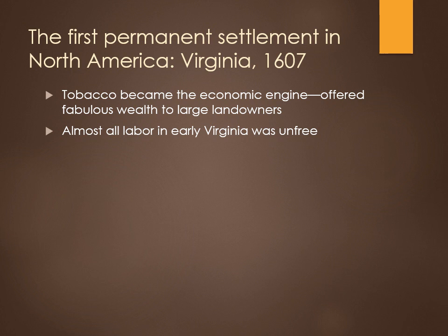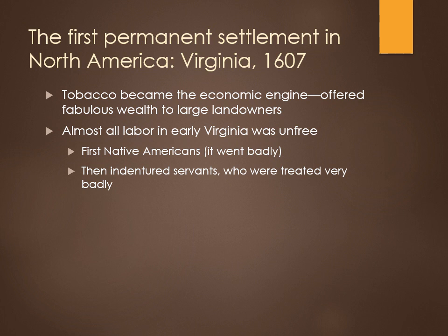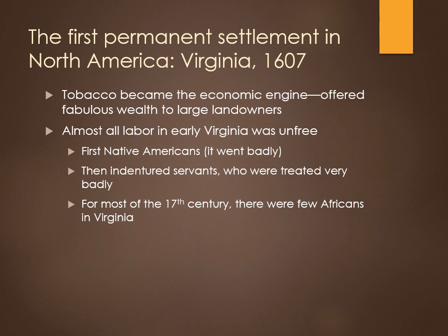Almost all labor in early Virginia was unfree labor, and that took three different forms. The first attempts were to force the labor of Native Americans. That went badly — they could escape, they knew the countryside, they were simply not willing to cooperate. Then they brought over indentured servants — people from the bottom of English or Irish society, carried across the Atlantic in return for several years of service. They were treated terribly; their lot was not much better than that of slaves. And for most of the 17th century, there were relatively few Africans in Virginia. By far the largest labor source was indentured servants.